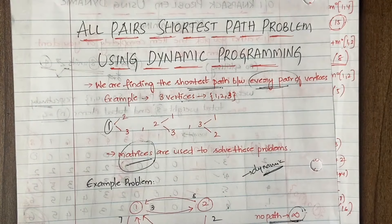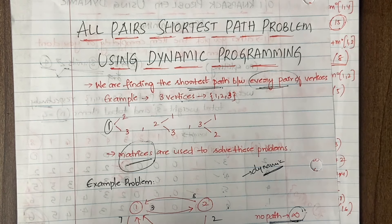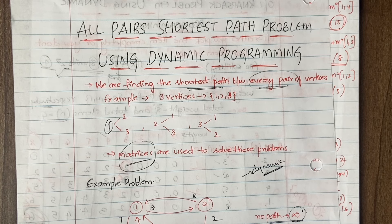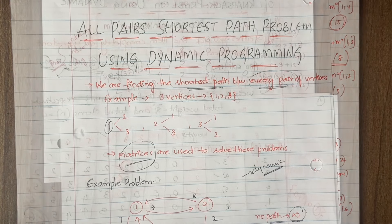Hello everyone, welcome back to my YouTube channel Trouble Free. In today's video we are going to learn about the All Pairs Shortest Path problem, part two, using dynamic programming. In the previous video we understood how to solve the problem, got our initial matrix, our matrix through vertex one, and our matrix through vertex two. Now let us complete the rest of the problem.